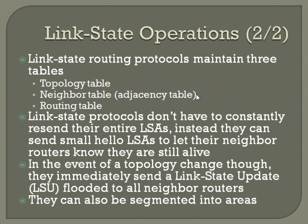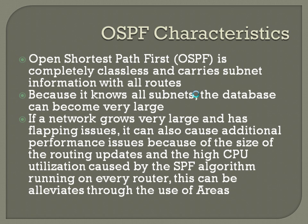You can also segment Link State operation routers into different areas to break down your routing table more easily. When we talk about Link State routing protocols, the one you need to worry about — particularly with the CCNA — is OSPF, Open Shortest Path First. It's completely classless and carries subnet information with all routes, supporting variable-length subnet masks. Because it knows all subnets, the database can become very large. If a network grows very large and has flapping issues, it can cause additional performance issues due to the size of routing updates and high CPU utilization caused by the SPF algorithm running on every single router.